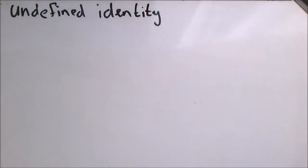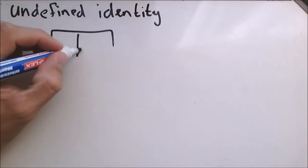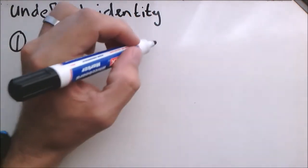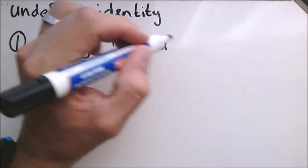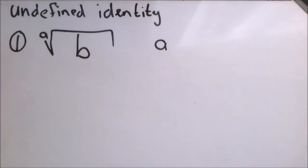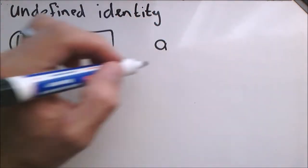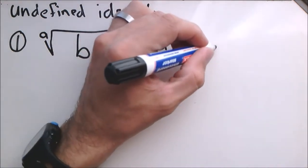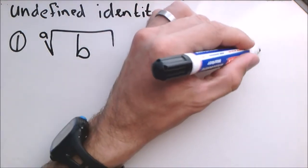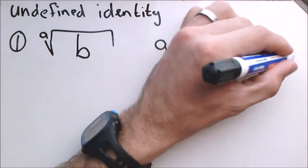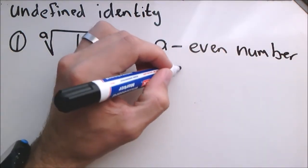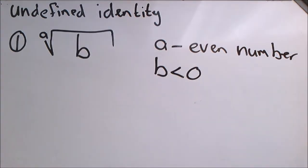So there are three scenarios in grade 11 that we would refer to where numbers become undefined. The first scenario is when you have a root. Let's just say that it is A and this is B. And this counts for even roots. Even number roots like the square root, the 4th root, the 6th root, 8th root etc. So when A is an even number